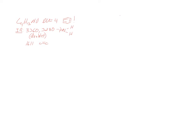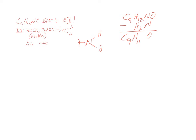Degrees of unsaturation are covered by the benzene ring. We subtract NH2 from C9H13NO, leaving C9H11O. In the NMR we have two doublets at 7.16 and 6.9 ppm, combined total of four H's, with coupling constants of 8.7 and 8.7 Hz. Those are two different protons coupled to each other.